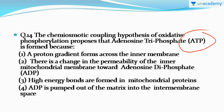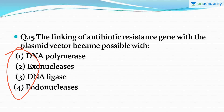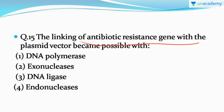Moving forward to question number 15: the linking of antibiotic resistance gene with the plasmid vector became possible with — you have to tell which one of the following made this linking of the antibiotic resistance gene with the plasmid vector possible. I hope you get it correct.